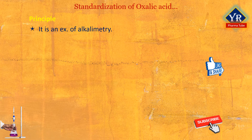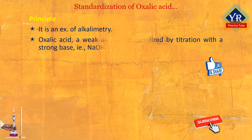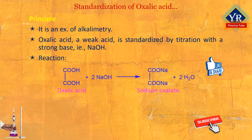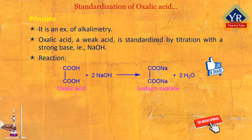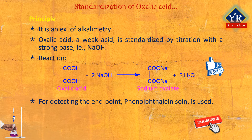The principle involved is alkalimetry type of titration. When a strong base is treated with a weak acid, the salt produced in the reaction is not completely hydrolyzed and the pH of the resultant solution at the end point is exactly 7. Oxalic acid, which is a weak acid, is standardized by titration with a strong base such as sodium hydroxide. The following reaction takes place when sodium hydroxide is treated with oxalic acid. In this titration, for detecting the end point, phenophthalene solution is used as an indicator.